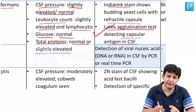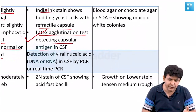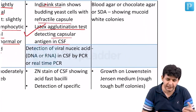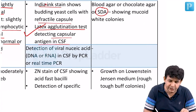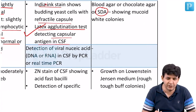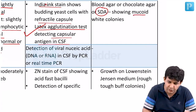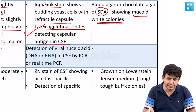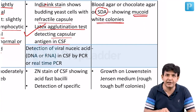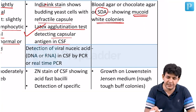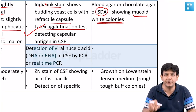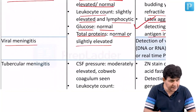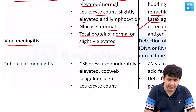Cryptococcus can be grown on blood agar, chocolate agar, and the universal fungal media which is Sabouraud Dextrose Agar (SDA), showing mucoid white colonies. The same applies to Candida - both show mucoid white colonies on SDA.